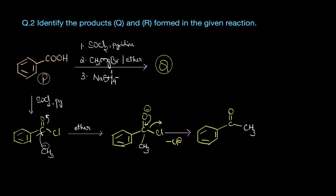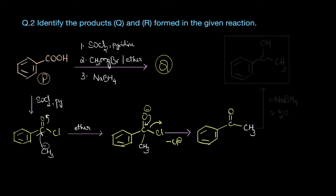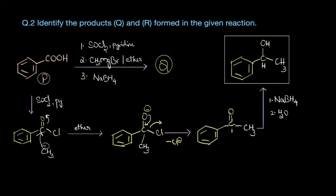The last step is reaction with sodium borohydride. Sodium borohydride is a reducing agent and it reduces the carbonyl compound to the corresponding alcohol. When we treat the ketone with sodium borohydride we get a secondary alcohol. So this is product Q.